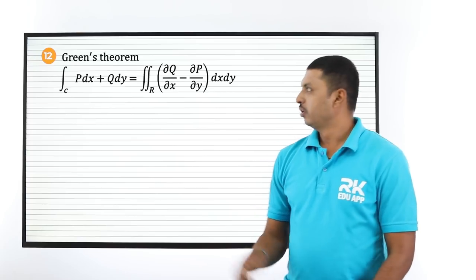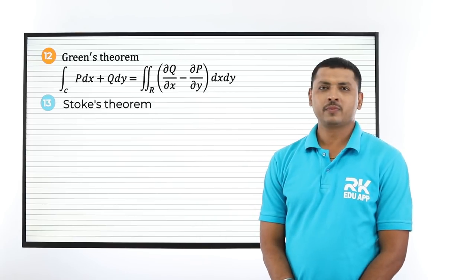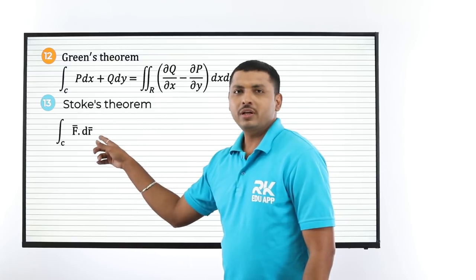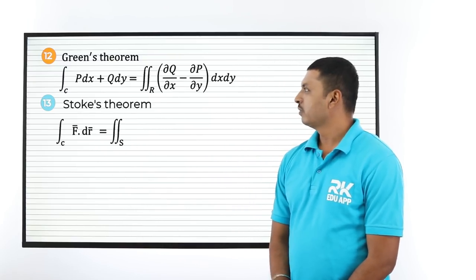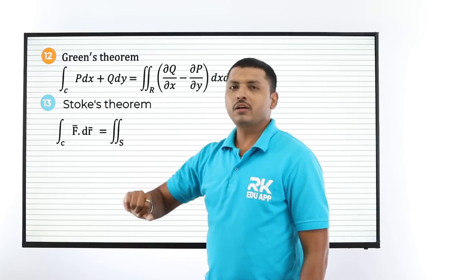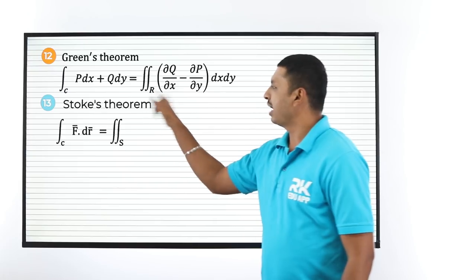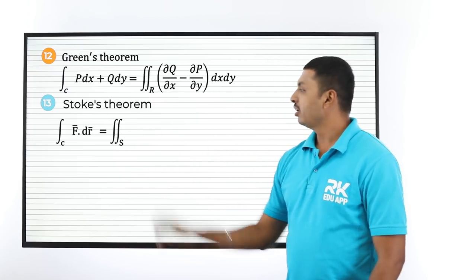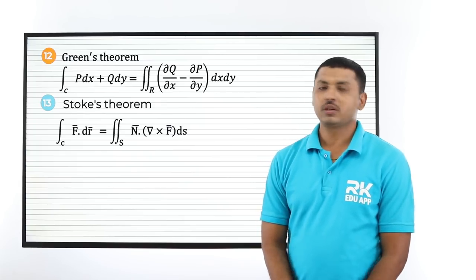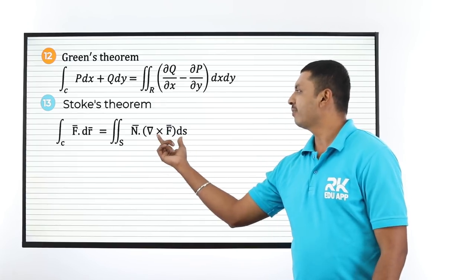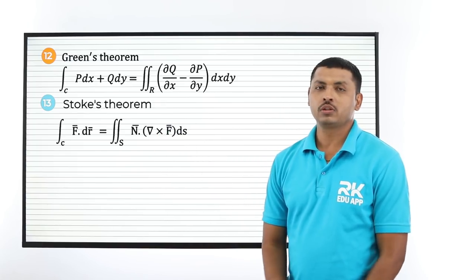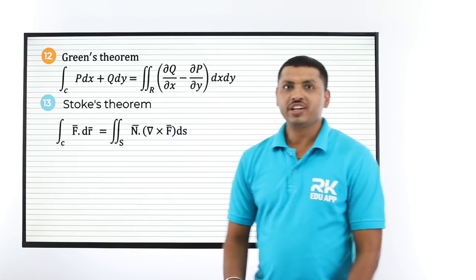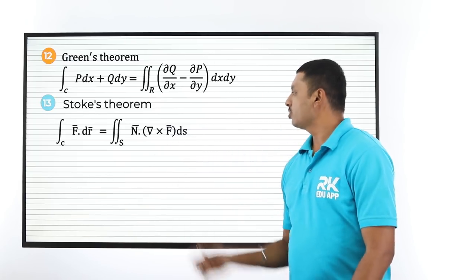Next is Stoke's theorem: ∮_C F̄ · dr̄ = ∬_S n̄ · (del × F̄) ds, where C means curve, R means region, and S means surface. Here del × F̄ is the curl as we saw earlier, and ds = dx dy.